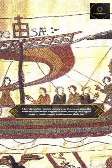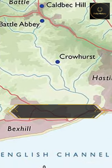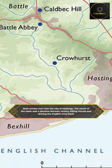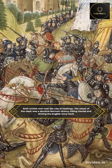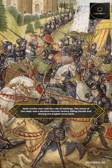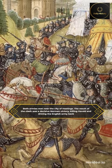A few days after Harold's victory over the Norwegians, the Normans crossed the English Channel, forcing the English army to hastily march south to meet their foe. Both armies met near the city of Hastings. The result of the clash was a decisive Norman victory, killing Harold and driving the English army back.